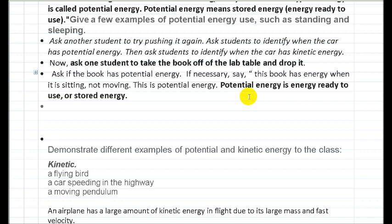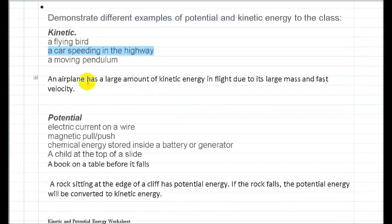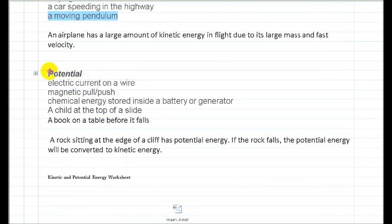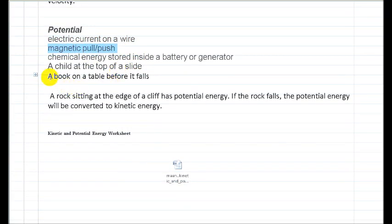The definition of potential energy is energy ready to use, or stored energy. Now I'm going to give you examples of kinetic and potential energy. Kinetic energy: a flying bird, a car speeding on the highway, or a moving pendulum. Potential energy: electric current on a wire, a magnetic pull, a book on a table before it falls.